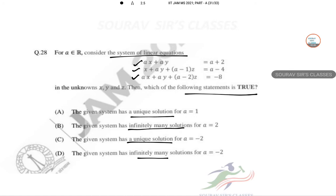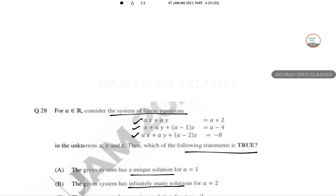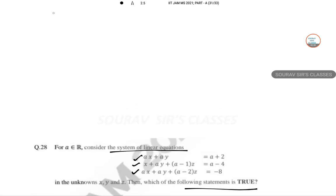Let's calculate the main matrix with the augmented one: a, a, 0, a plus 2; 1, a, a minus 1, a minus 4; and a, a, a minus 2.